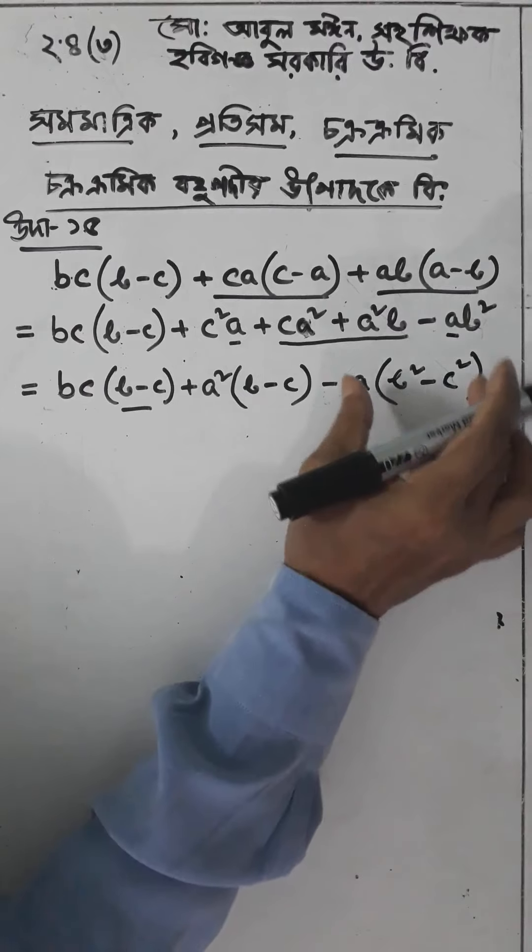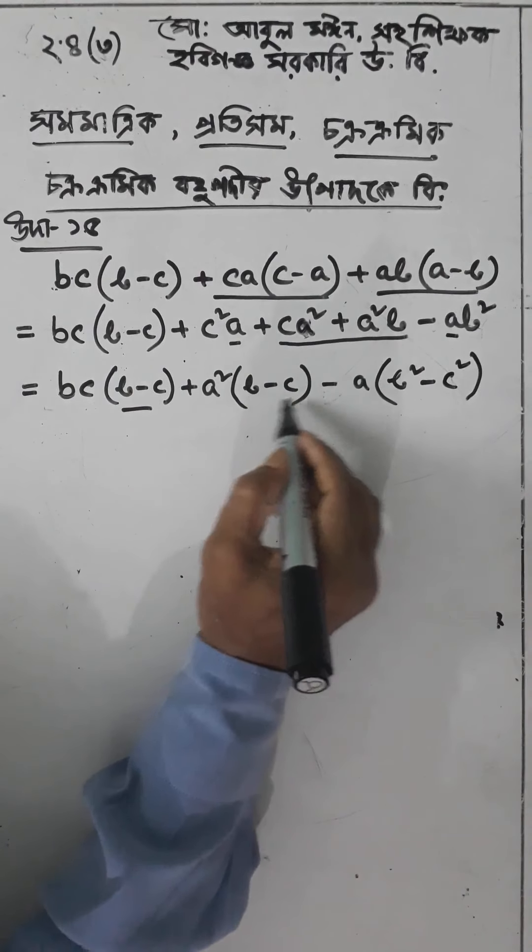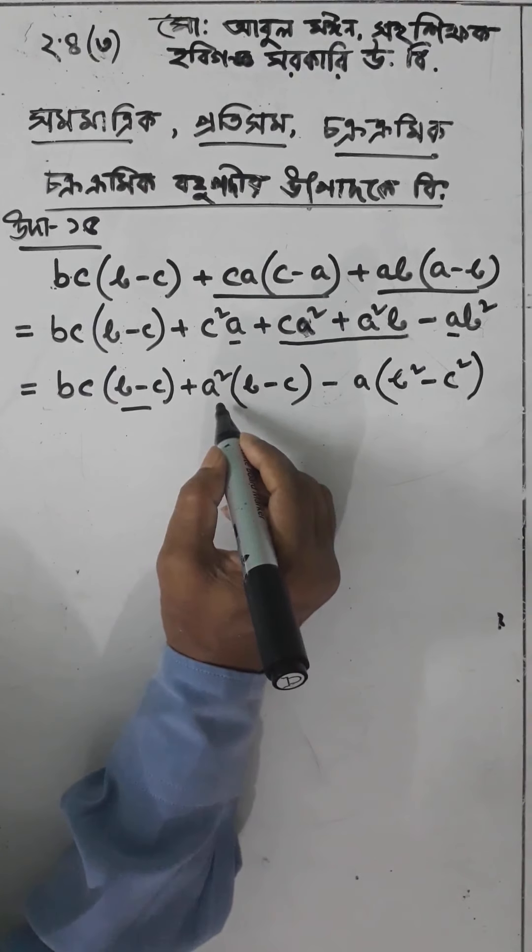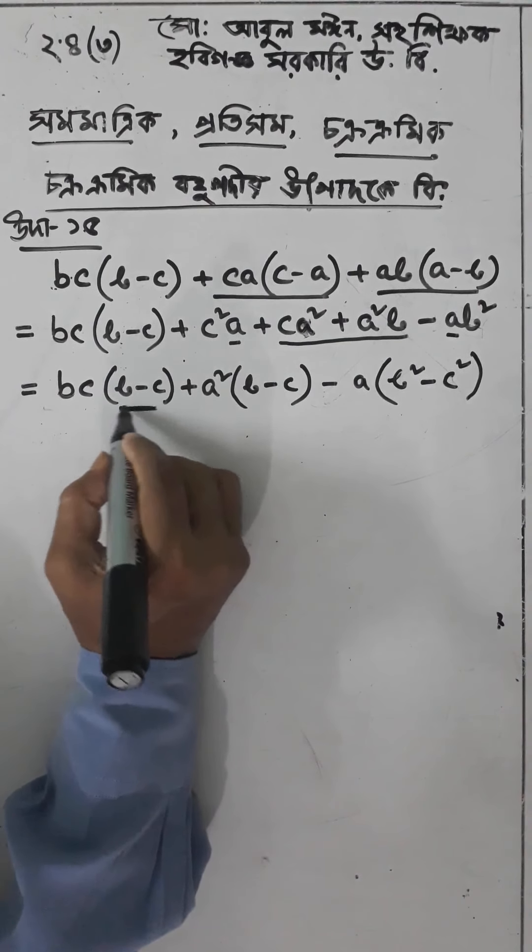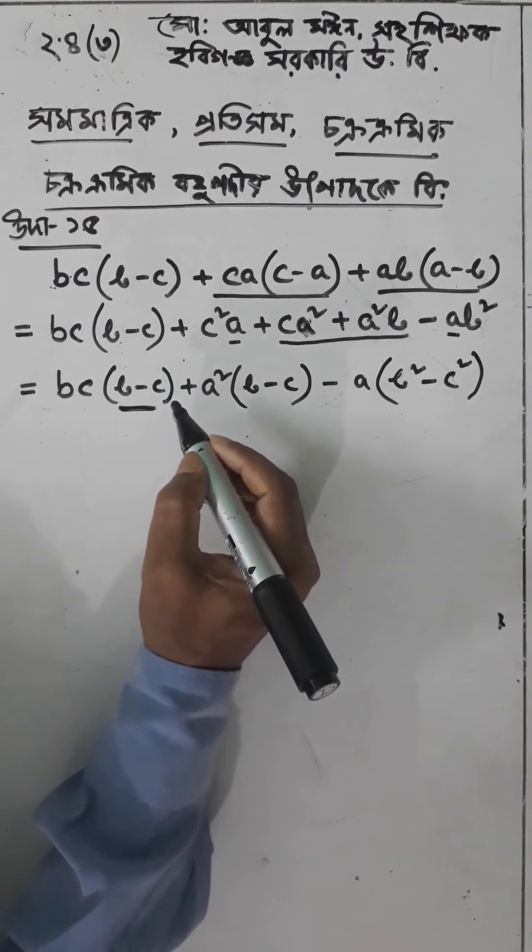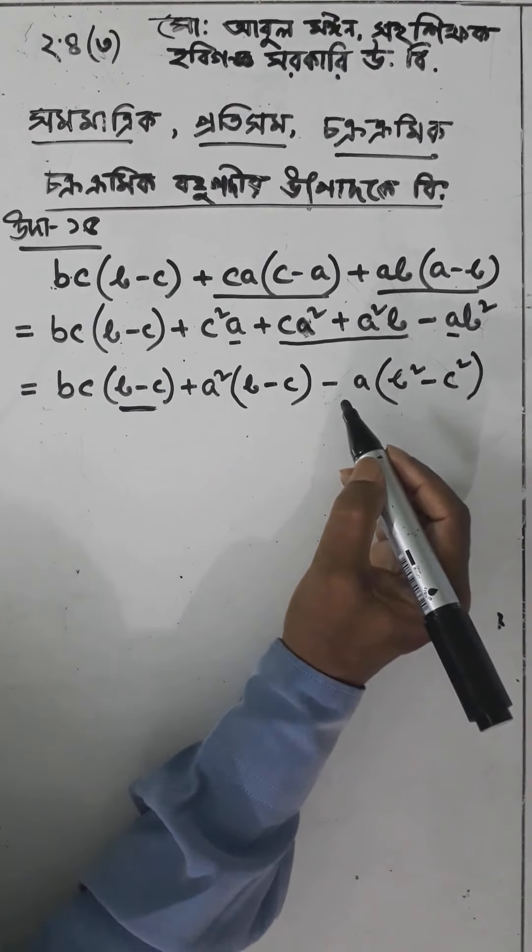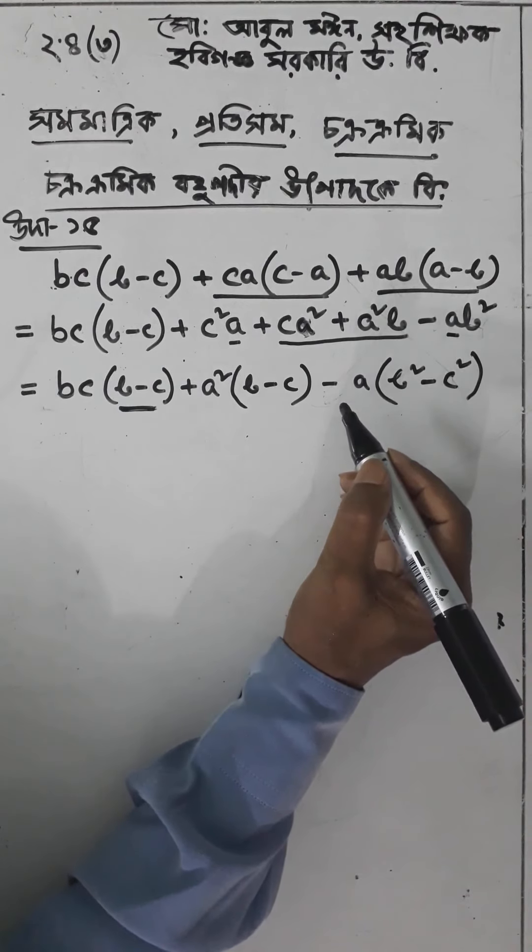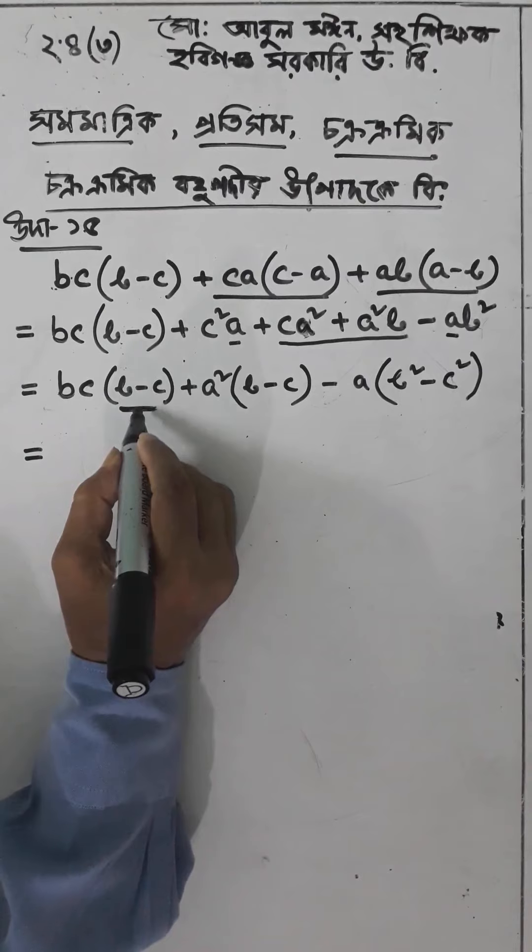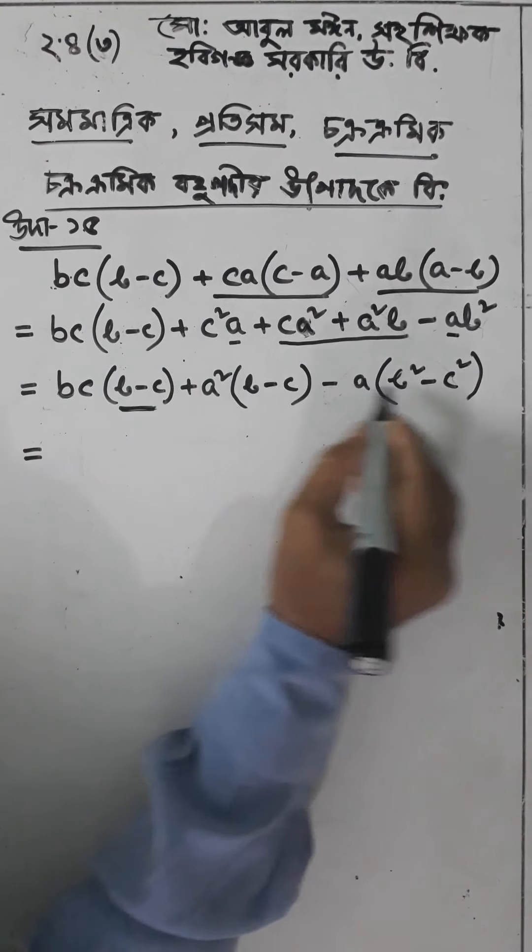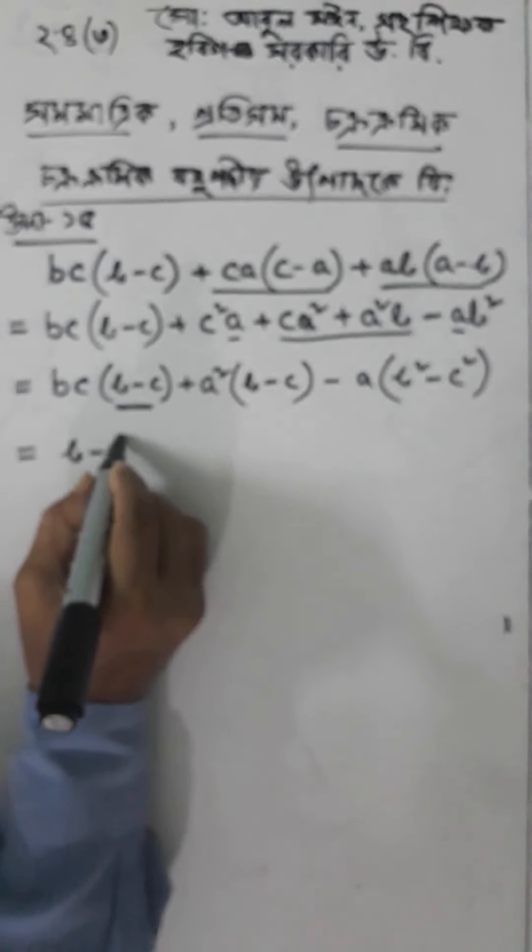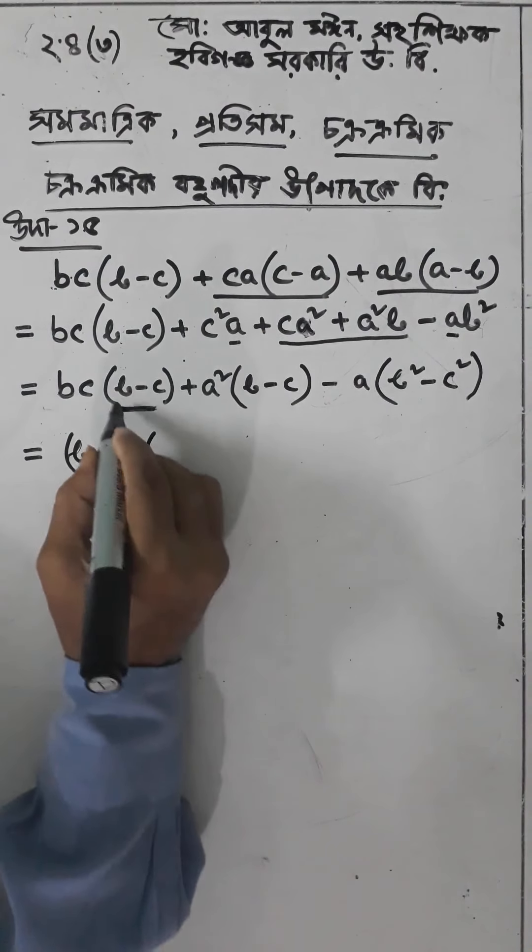Now b square minus c square - we can factor this. b minus c exists in three places. We can take b minus c common. b square minus c square equals b plus c into b minus c. Taking b minus c common gives b plus c.